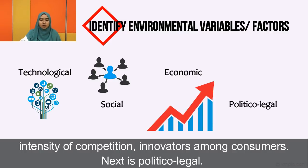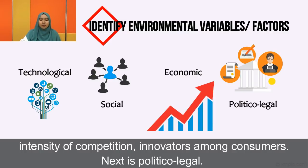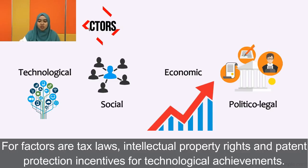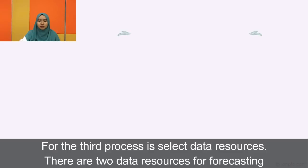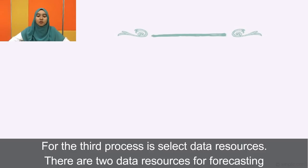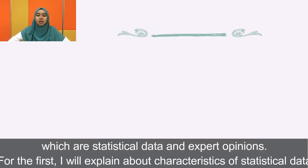Next is the political and legal factor. The factors include tech laws, intellectual property rights and patent protection, and incentives for technological achievement. For the third process, we select data resources. There are two data sources for forecasting: statistical data and expert opinion.